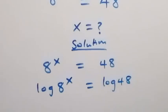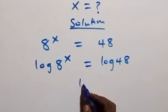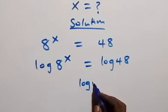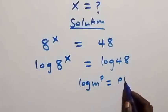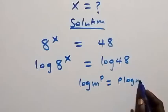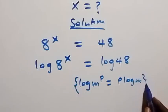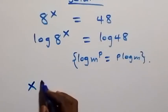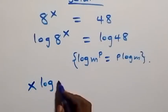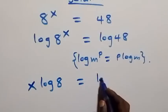From here we can apply the power rule of logarithm: log m raised to power p is the same as p log m. The power here is x, so we can write this as x log 8 equals log 48.